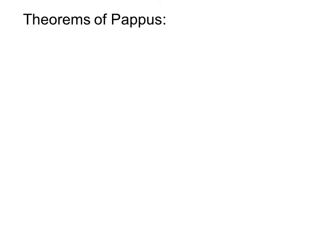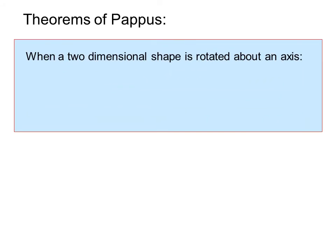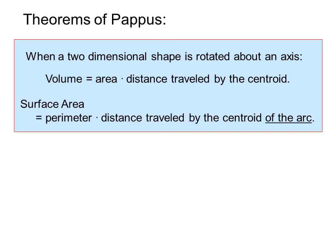And now we move to the theorems of Pappus. When a two-dimensional shape is rotated about an axis, volume equals area times the distance traveled by the centroid. Surface area equals the perimeter times the distance traveled by the centroid of the arc.